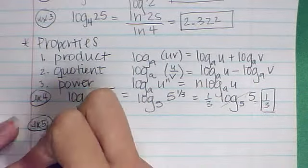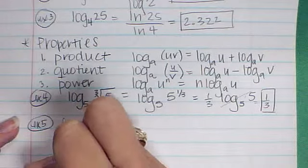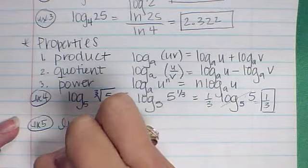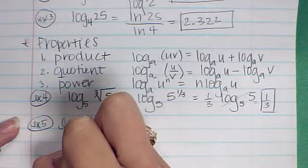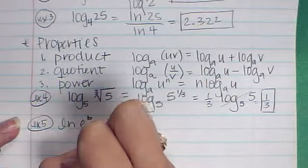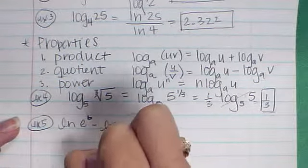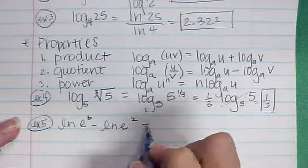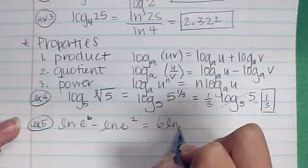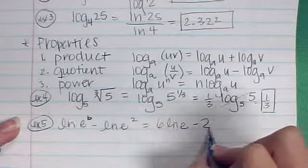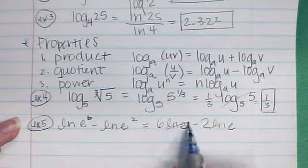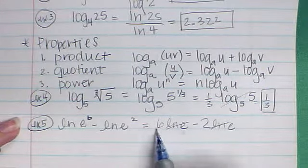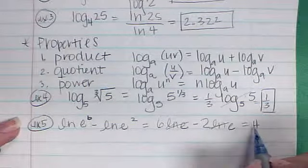Sample number 5, the natural log of e to the 6 divided by the natural log of e squared. Remember I can bring the 6 down front, so I have 6 times the natural log of e minus, bring the 2 down front, 2 times the natural log of e. Natural log and e cancel each other, so I have 6 minus 2, which is 4.